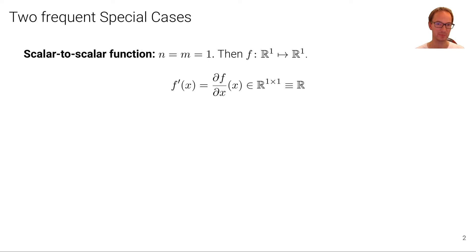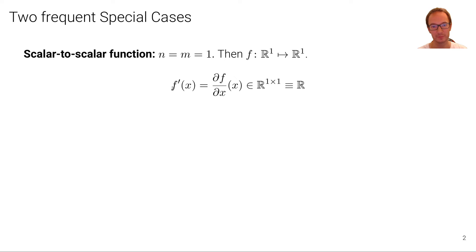There are two frequent special cases. The first is a scalar-to-scalar function where both n and m equal 1. In this case we have a function that maps from R^1 to R^1, and we have just the one-dimensional derivative that can be written as we've seen in the previous unit — simply an element of R^(1×1), or equivalently an element of R.